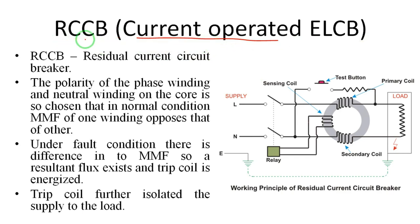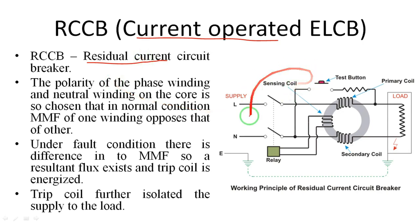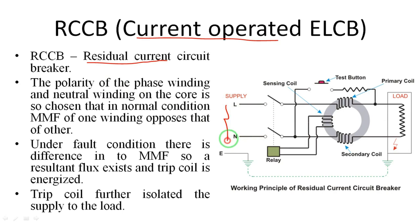The current operated ELCB has another name: RCCB, which stands for Residual Current Circuit Breaker. Please underline this — residual means minimization of current. This circuit breaker operates on the principle of minimization of current. Looking at the diagram, L means line and N means neutral.